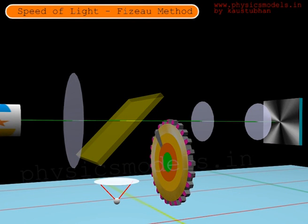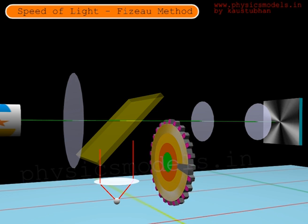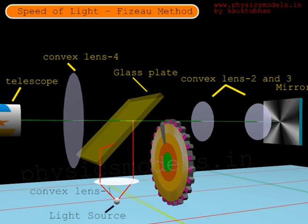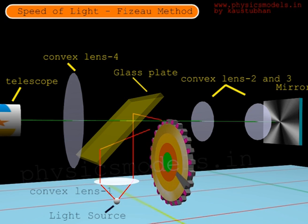In this video, I would like to describe how the scientist Fizeau measured the speed of light. He took a beam of light coming from a light source, made it travel 8.6 kilometers up to a mirror, and back again another 8.6 kilometers. That kind of large distance was needed to measure the speed of light.